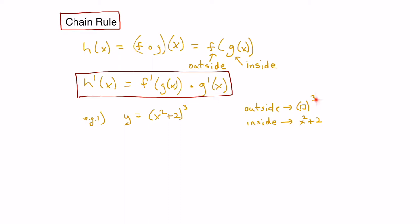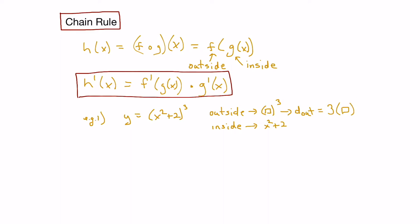Let's find the derivative of each function separately. Using the power rule, the derivative of the outside function would be 3 times the bracket squared. Using the sum and power rules, the derivative of the inside function would be 2x. So applying the chain rule, y prime would be the derivative of the outside function, which is 3 bracket squared, times the derivative of the inside function, which is 2x.